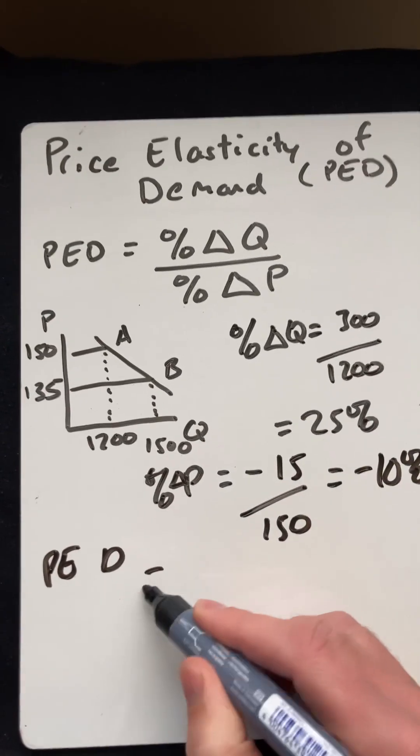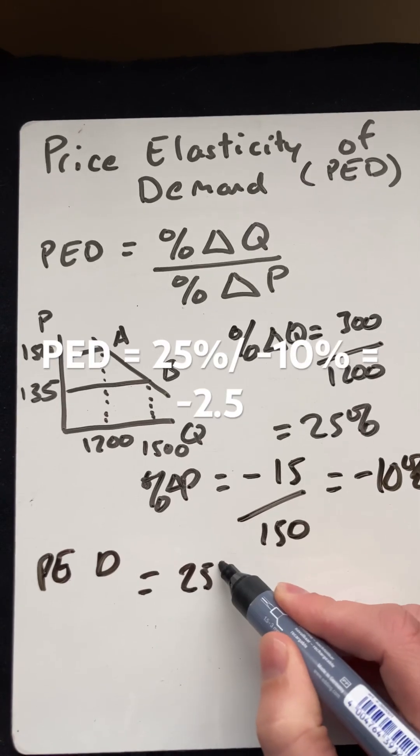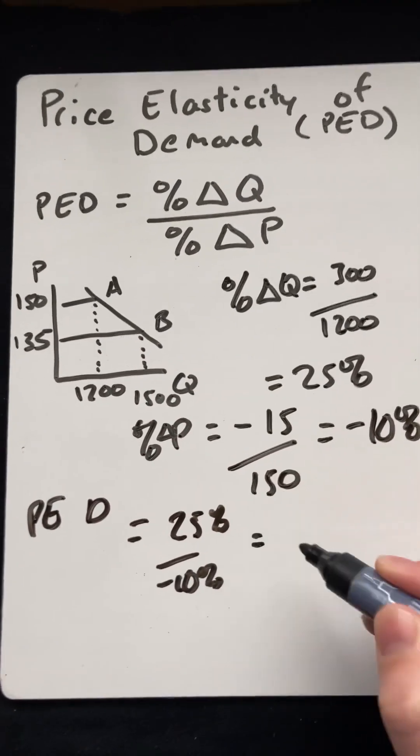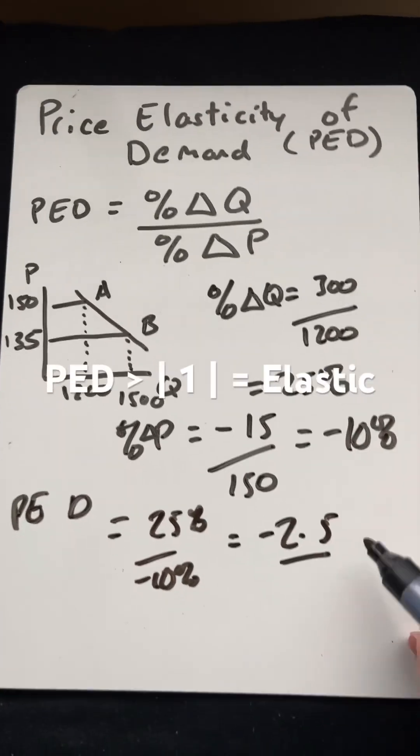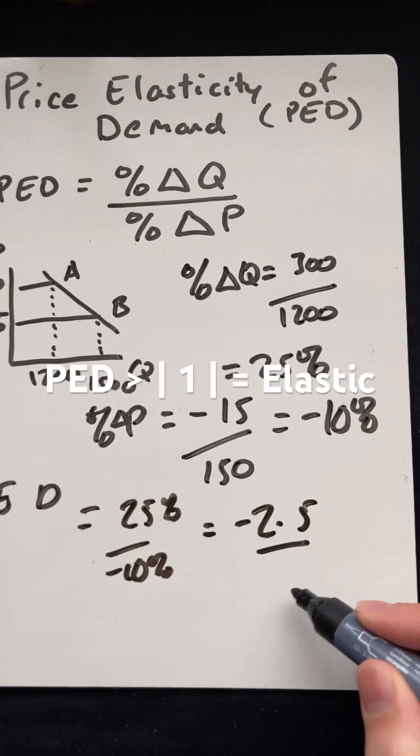So the price elasticity of demand then is 25% over negative 10%, which is minus 2.5. That is the price elasticity of demand. Because it is greater than 1, it's elastic.